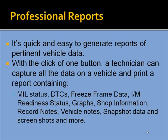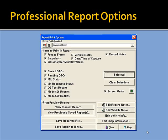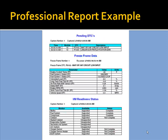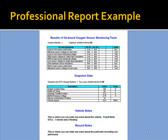Professional Reports: it's easy and quick to generate reports of pertinent vehicle data. With the click of a button, a technician can capture all data and print a report containing MIL status, DTCs, freeze frame data, inspection and maintenance monitors, graphs, shop information, notes typed on the vehicle, snapshots, and more. Simply check the items you want to include, or click select all, then view or print the report. Screenshots here show page one, two, and three of a sample report.